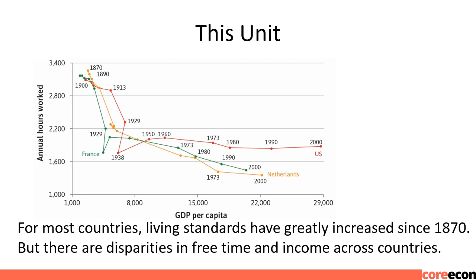Since the 1950s, annual hours worked continued to fall to about 1400 hours per year in France and the Netherlands as GDP per capita increased, due to a smaller work week and more vacation time enjoyed by them, but leveled off in the US at about 2000 hours per year.